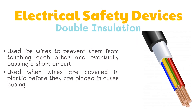Lastly, double insulation is used for wires to prevent them from touching each other and causing a short circuit. This safety device is used when wires are covered in plastic before they are placed in an outer casing.